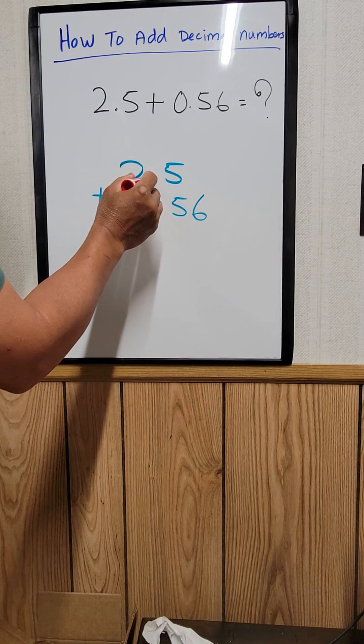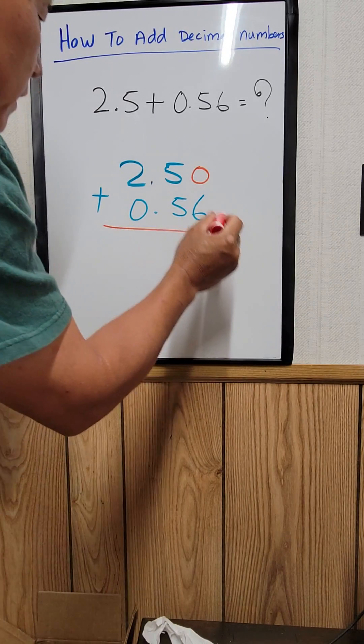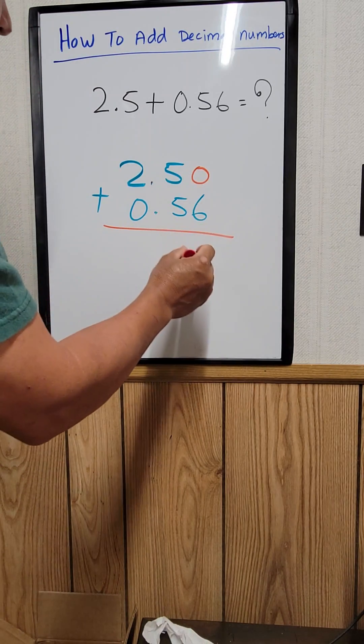Since this is only at one place at the decimal point, you can just add the 0 on the top right here, and then you can add that. The 6 plus 0 is 6.